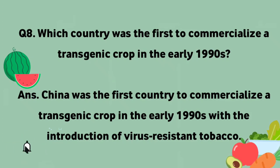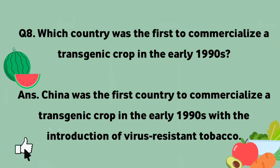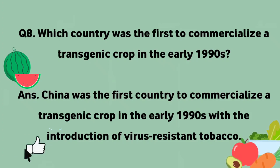1990 ki duhai ke awail mein transgenic fassal ko tijarati banane waala pahla mulk koun sa tha? China pahla mulk tha jisne 1990 ki duhai ke awail mein virus se bachne waale tambaqo ko mutaraf karane ke saath transgenic fassal ko tijarati banaya.